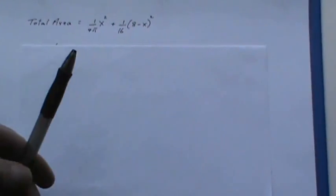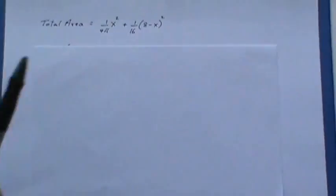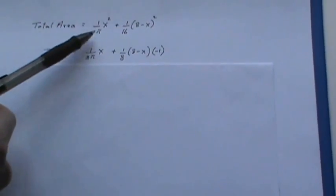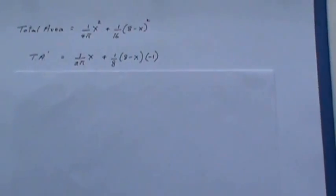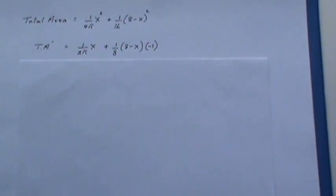So the total area is the area of the circle plus the area of the square. When I take the derivative of this fairly simple it's just 2 times this X to the 1 and over here this is the chain rule but the derivative of what's inside is simply negative 1.